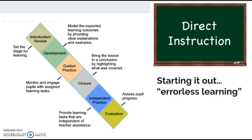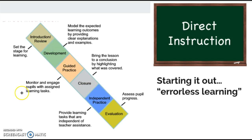One of the first methodologies that KDE recommends to support students in learning is direct instruction. Rather than have students explore different concepts and come up with a variety of wrong answers, we want to start with explicit and direct instruction — that errorless learning. One way to think about direct instruction is this laddered approach: we introduce the concept setting the stage, then model the expected outcomes being very clear and explicit, giving examples, then guide students through practice ensuring their learning is accurate, and then close that lesson by highlighting what we've learned, giving students opportunities for independent practice so we can evaluate student progress. The best models of teaching have evaluation scaffolded throughout through formative assessment at each phase of the instruction.